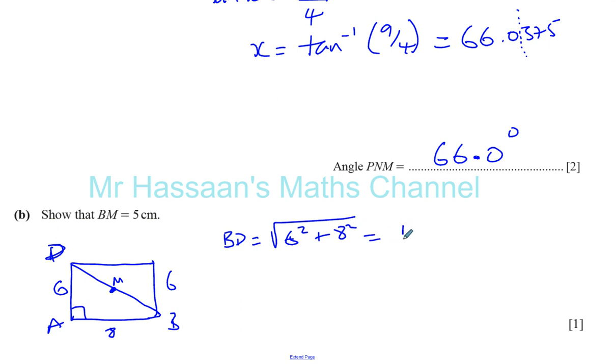Well, that's going to give me 10 centimeters, because you're going to have 36 plus 64 is 100. The square root of 100 is 10. That means BM is a half of BD. Okay, because it's exactly halfway along. It's where the diagonals intersect. The diagonals bisect each other in a rectangle. So it's cut in two equal halves. So that's a half of 10.